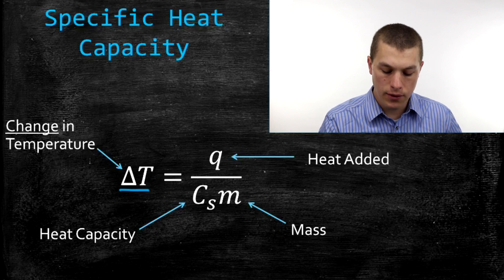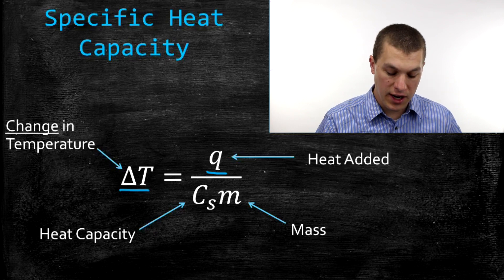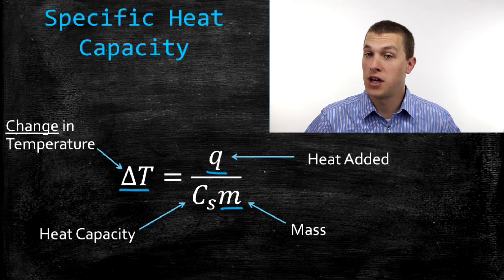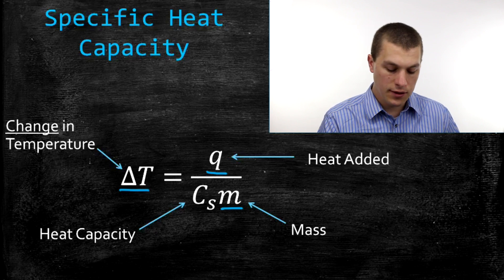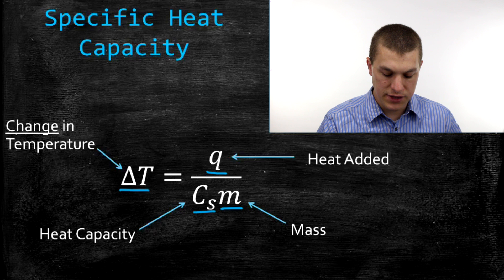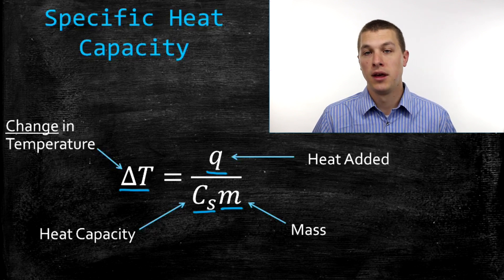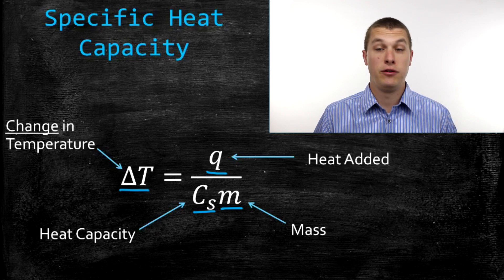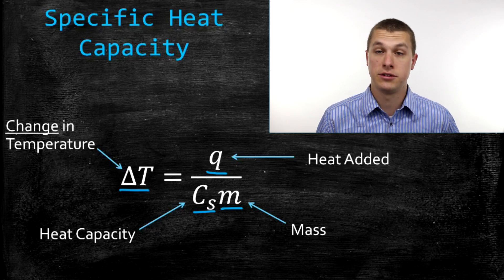The more heat we add — which is Q — the bigger that change in temperature. Mass, on the other hand, is on the bottom of the equation. The bigger the object, the more energy it takes to heat it up, so a big giant pan takes more energy to heat than a very small pan. The last variable is specific heat capacity, which tells us how hard it is to heat something up. That's something you look up in a table — scientists have measured this for many different materials, and you can find a very long list of substances and their heat capacities.